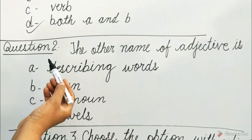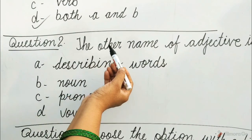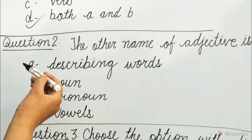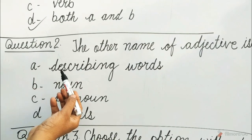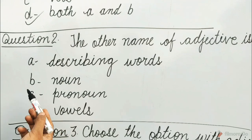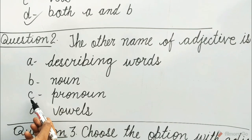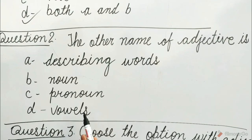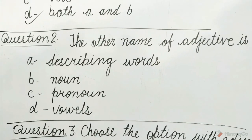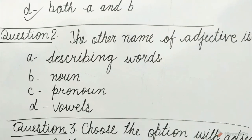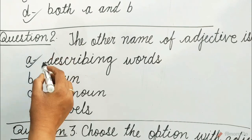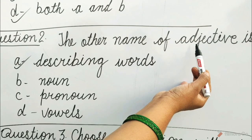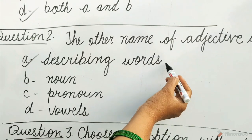Question 2: The other name of adjective is. Options are A. Describing words, B. Noun, C. Pronoun, D. Vowels. Guess children, which option will be correct? Yes, it is A option — Describing words. The other name of adjective is describing words.